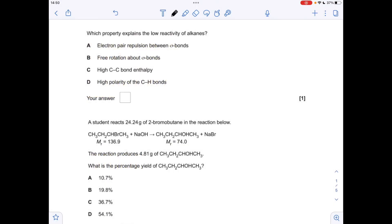Okay, so let's make a start. Which of the following properties explains the low reactivity of alkanes? Well, it's down to C, the high C-C bond enthalpy.